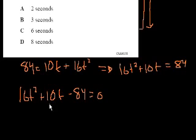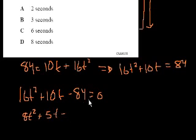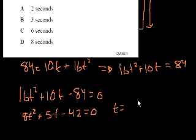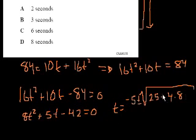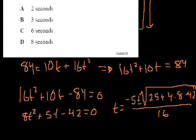Now we can simplify — everything is divisible by 2 — giving 8t squared plus 5t minus 42 equals 0. And then we can use the quadratic formula. So t equals negative b — minus 5 — plus or minus the square root of b squared, which is 25, minus 4 times a (8) times c. c is minus 42, so instead of times minus 42 we put a plus and do plus 42 — a negative times a negative is a positive. All of that over 2a, which is 16.